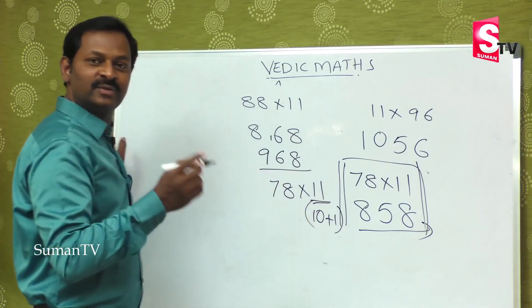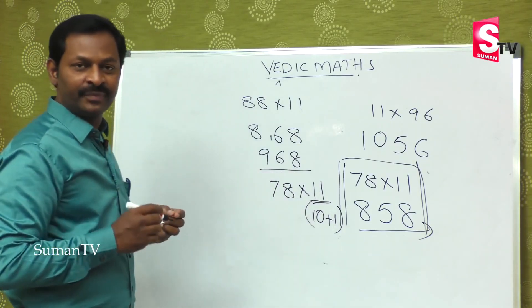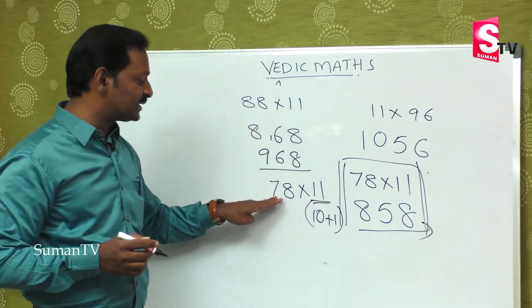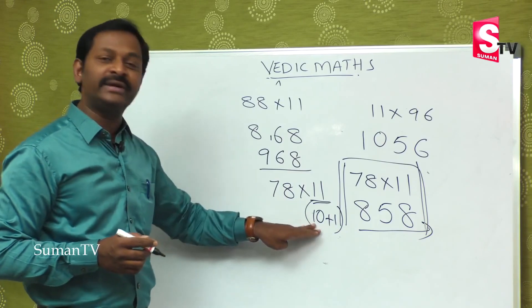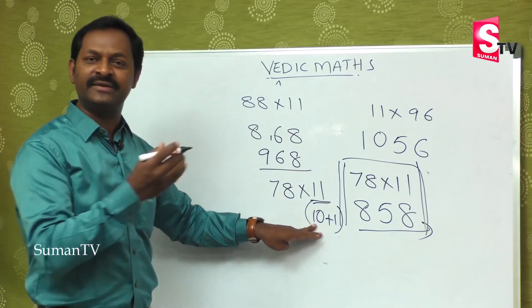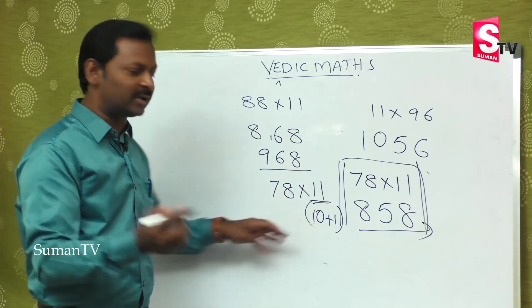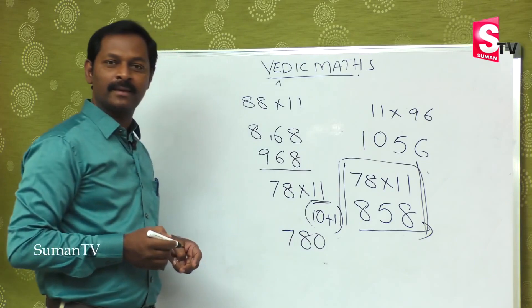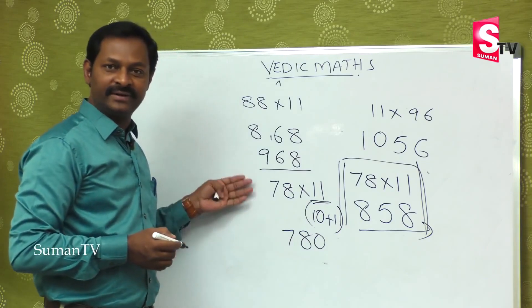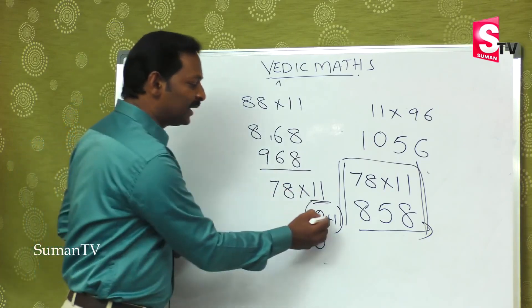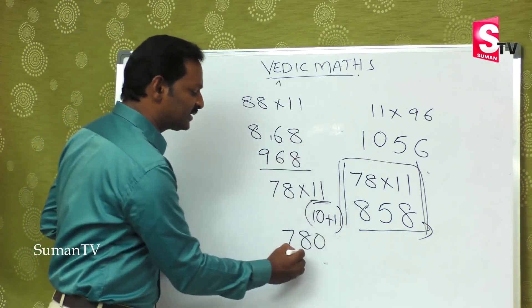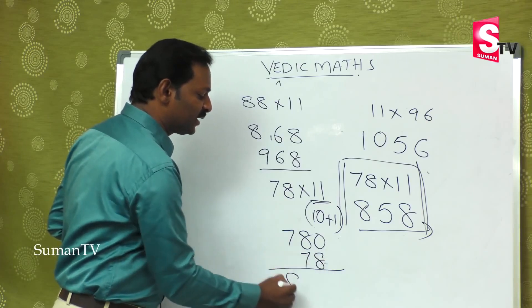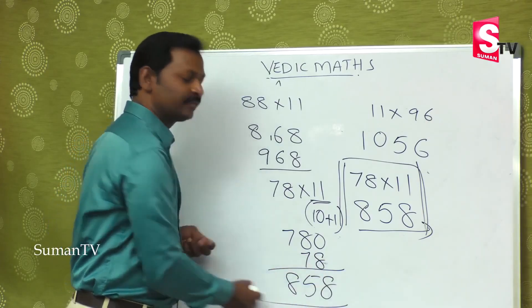We can verify: 11 is 10+1, so 78×11 = 78×10 + 78×1 = 780 + 78 = 858. You will get 858.